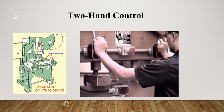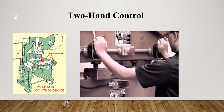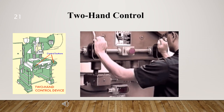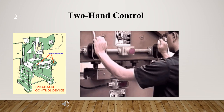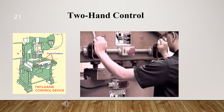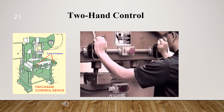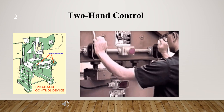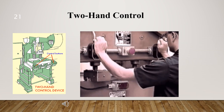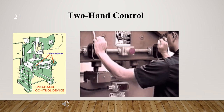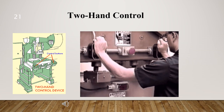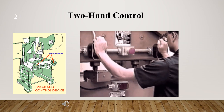In this part, we will learn about the two-hand control safety device. Two-hand controls can be used as safeguarding devices in the single-stroke mode of operation on part revolution clutch presses. Similar to the two-hand trip, this device keeps the operator's hands away from the point of operation during the entire machine stroke.